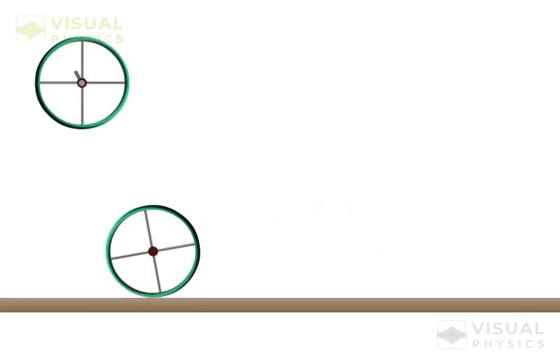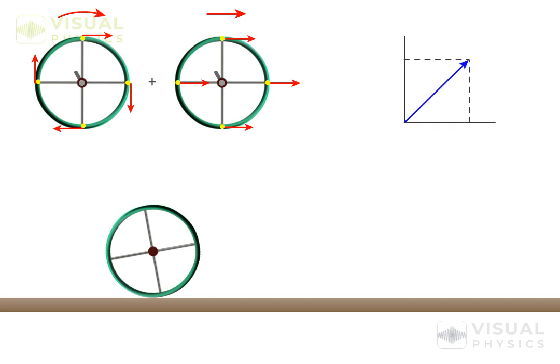That is to say that the rolling motion of a ring can be split into a pure translational motion and a pure rotational motion about its center of mass. This is effectively similar to resolving a vector into components.